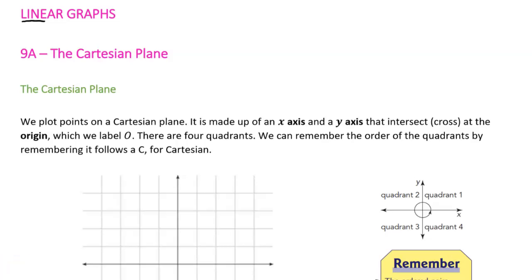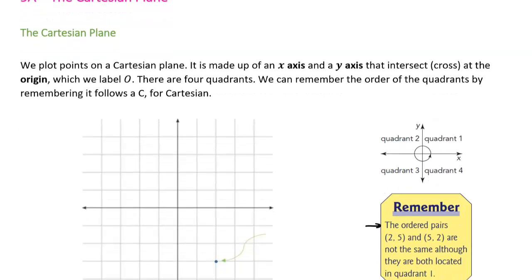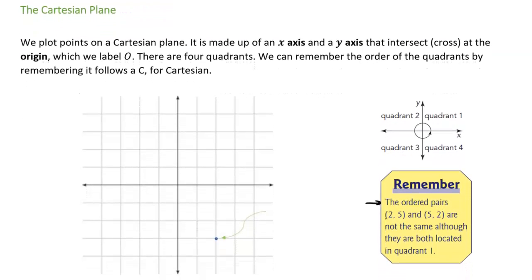Today we're going to start taking a look at linear graphing. That word linear has 'line' in it, so it tells us we're going to be graphing lines. To do that, we need to be able to plot points, and to plot points we need a Cartesian plane. The Cartesian plane is made up of an x-axis — the horizontal line — and a y-axis — the vertical line. Notice that there are arrows on the ends, because these axes go off infinitely in those directions.